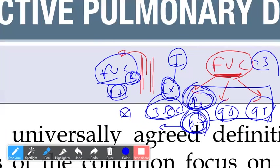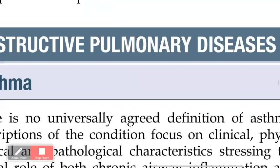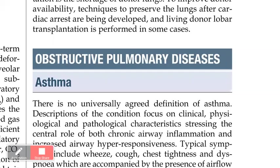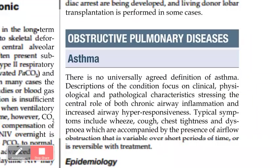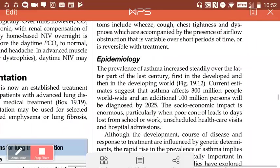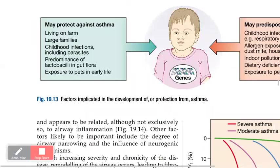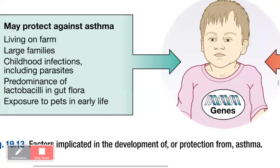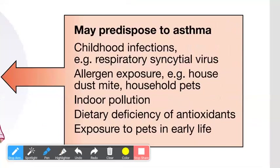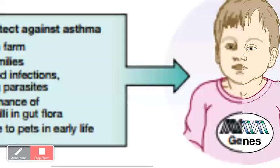Treatment involves bronchodilators. When prescribed, there is improvement in the forced vital capacity. The FVC is reduced by at least 15% as a diagnosis of asthma. Now for pathophysiology: the patient gets exposed to allergens, predisposed by childhood infections, allergen exposure, indoor pollution, smoking, dietary factors, and pets.